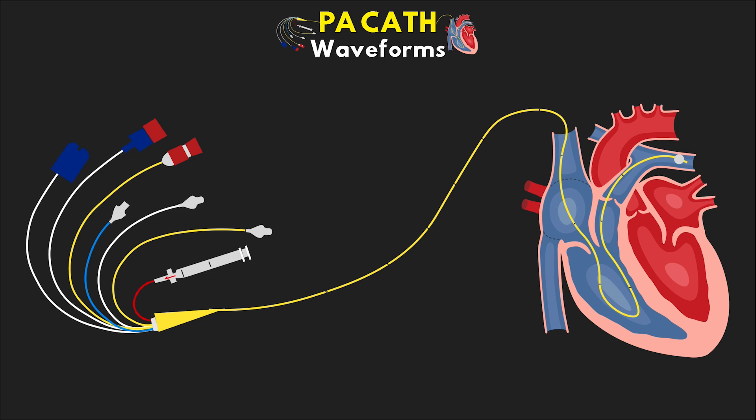In that last lesson, we talked about the basics of our PA catheter, including the different parts and lumens. I briefly talked about some of the values and waveforms that we would see when we're transducing those ports. In this lesson, I'm going to dig deeper into each one.